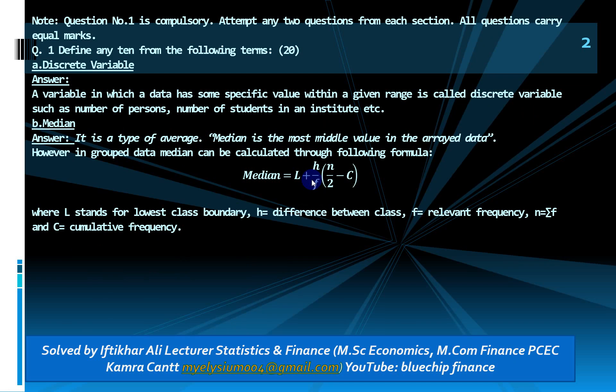The first question consists of theoretical questions. First: discrete variable. A discrete variable is a variable in which our data has some specific value within a given range. For example, number of students or number of persons. Second: median. Median is a type of average — it is the most middle value in the arrayed data.